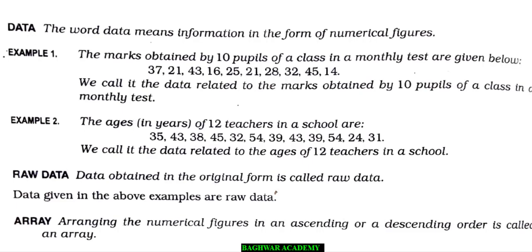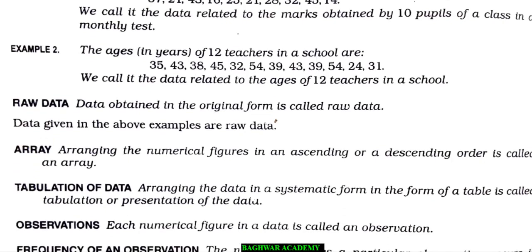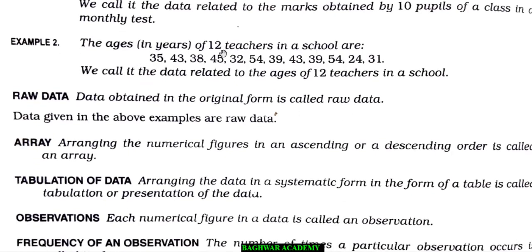Second, you have raw data. Data obtained in the original form is called raw data. Just you see — this data we are saying, this has been obtained from somewhere. Data given in the above examples are raw data. Raw data is data which is in original form — originally, suppose these marks have been written and the data collection has been made by themselves, not copied from somewhere else. So data collected by themselves in original form is called raw data.